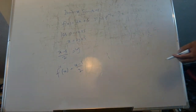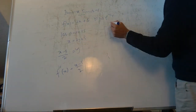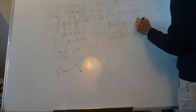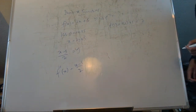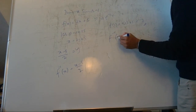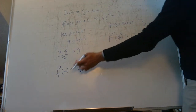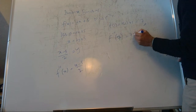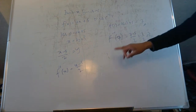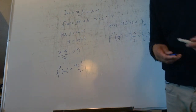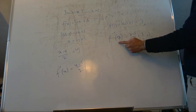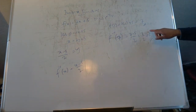Let's verify: f of 1 equals 2 times 1 plus 5, which is 7. Now putting 7 into f inverse: (7 minus 5) over 2 equals 2 over 2, which is 1. It gives the original number back, so that's the correct inverse. You can always check by substituting a number and confirming the inverse returns the original input.